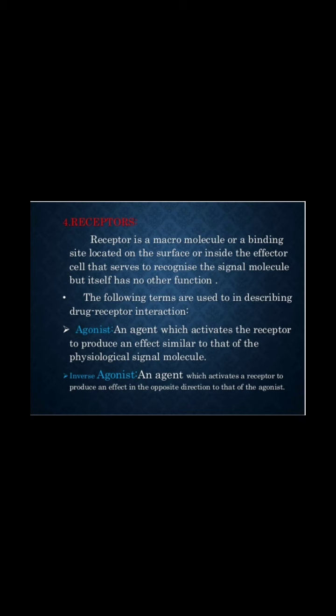Next is mechanism of action of drugs due to biological properties, and the first point is receptors. A receptor is a fundamental tissue component in which a drug molecule interacts to produce its mechanism of action. These are macromolecules and they serve to recognize the signal molecule but themselves have no other function. One should keep in mind that the drug cannot produce any response which is not already shown by the tissue.